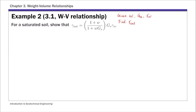I'm going to use this example to illustrate that you can derive all these complicated relationships or equations in your textbook using a phase diagram and the basic definitions. You don't have to memorize all these very complex equations — just six basic definitions and the phase diagram.